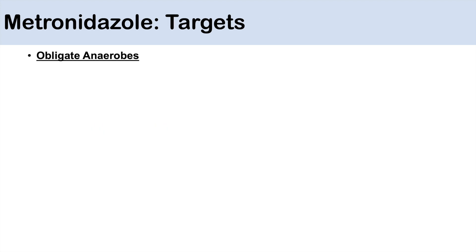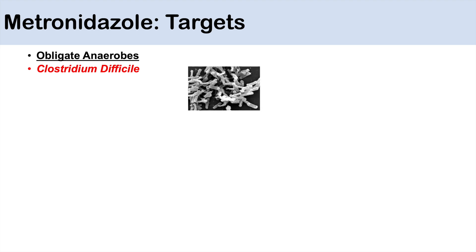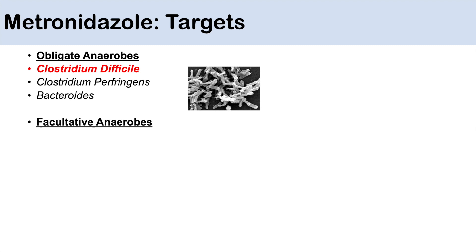So what are some of the bacterial targets for metronidazole? The key targets are the obligate anaerobes. These include Clostridium difficile, which is one of the biggest targets for metronidazole use. Other targets include Clostridium perfringens, which is involved in gas gangrene. It's also involved in treating Bacteroides infections.